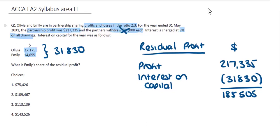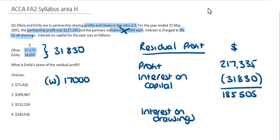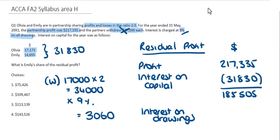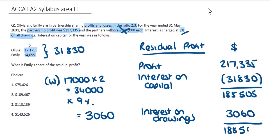We don't adjust for the actual drawings — they go to the drawings account — but we do adjust for the interest charged on drawings, as this is charged to the partners and forms part of profit and loss. Drawings were $17,000 each, so $34,000 total, and at 9% that gives us $3,060. This is charged to the partners so we add it onto the profit, giving a total residual profit of $188,565.